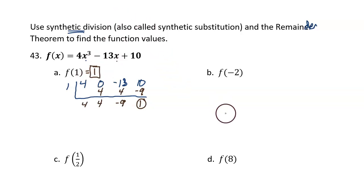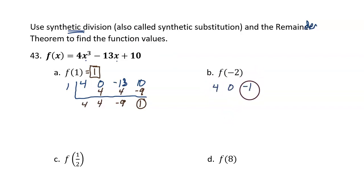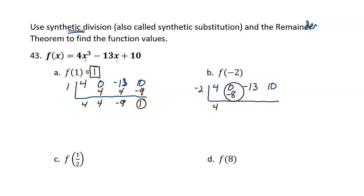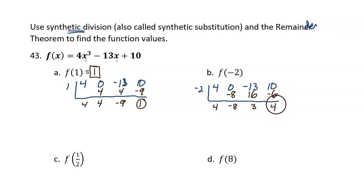Now question B. Coefficients again: 4, 0, negative 13, and 10. This time divide in negative 2. Bring down the 4: negative 8, negative 8, 16, 3, negative 6, and 4. The remainder is 4, therefore f of negative 2 equals 4.